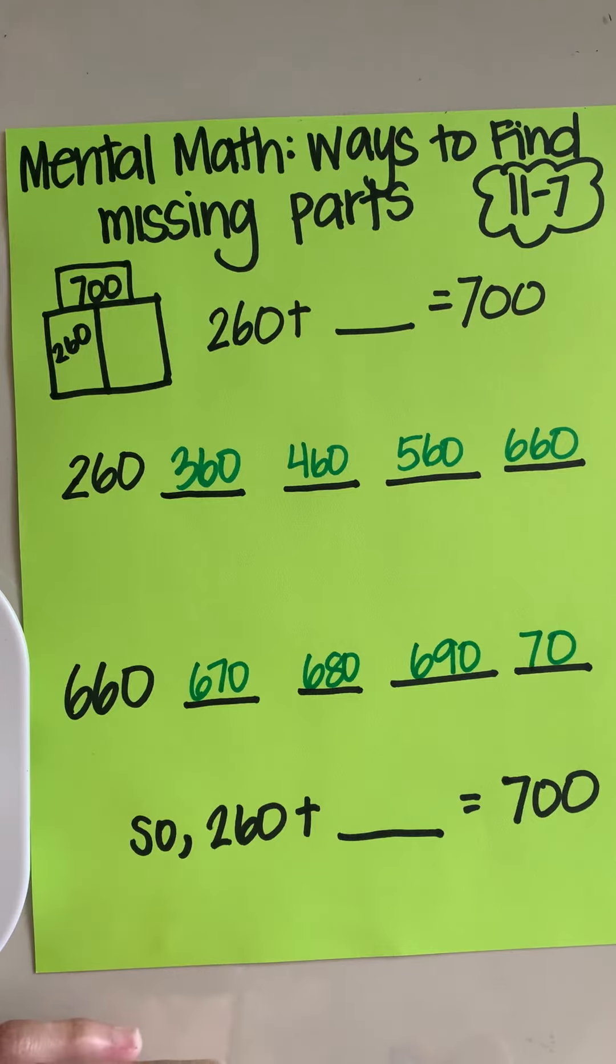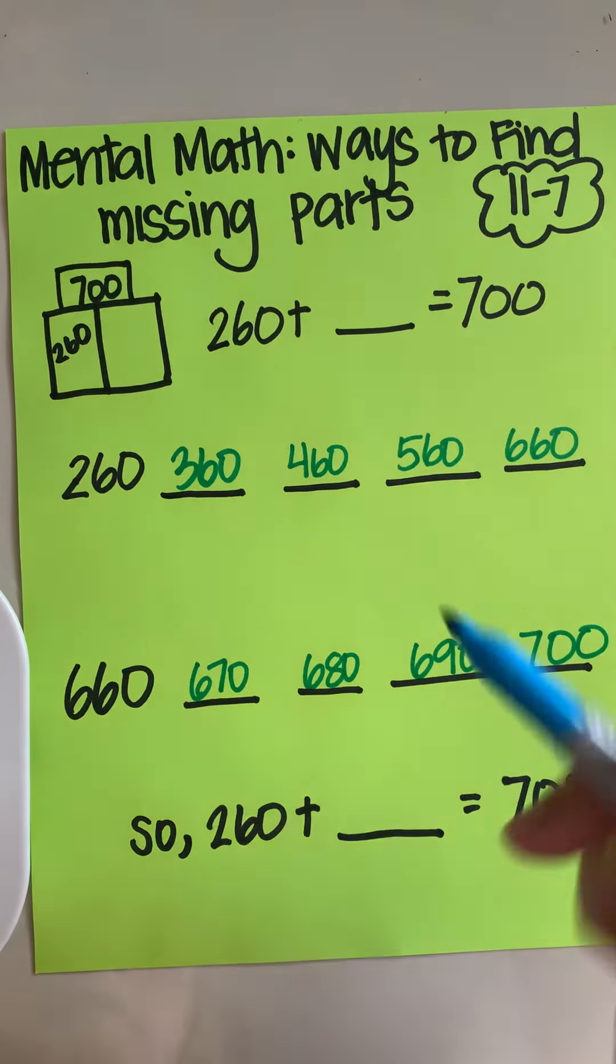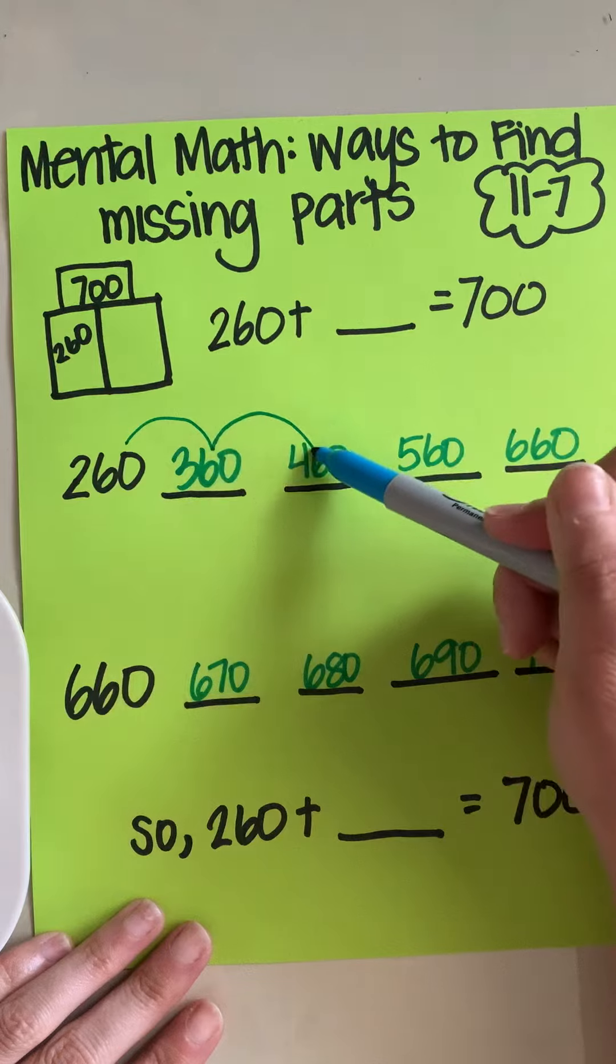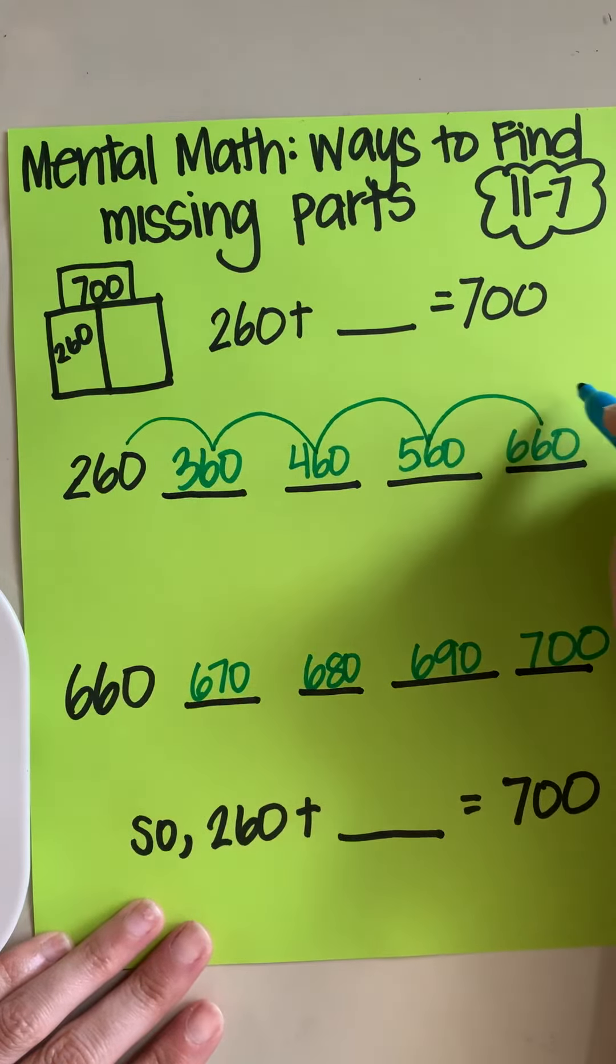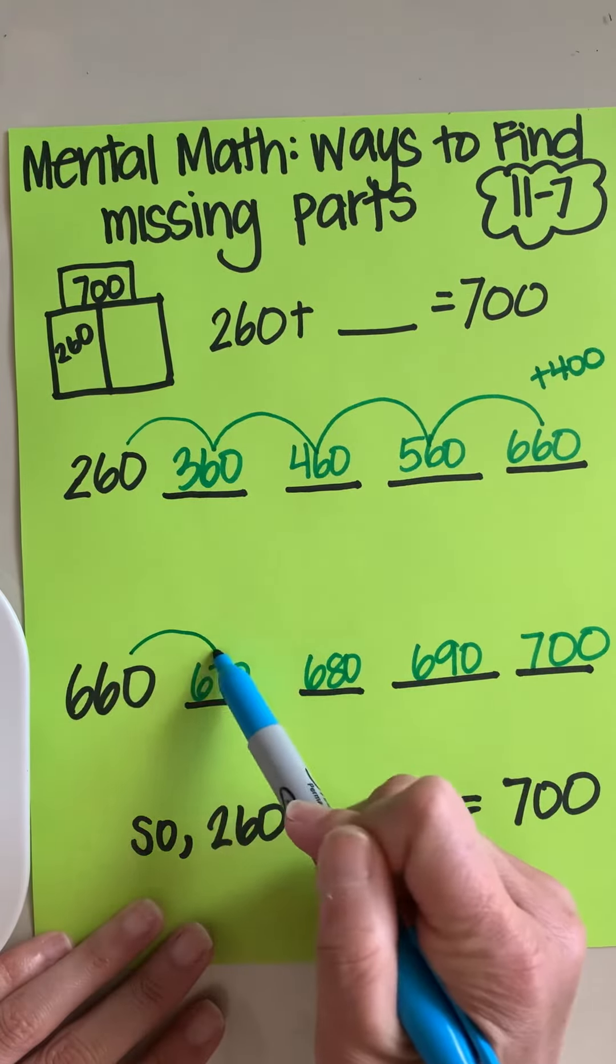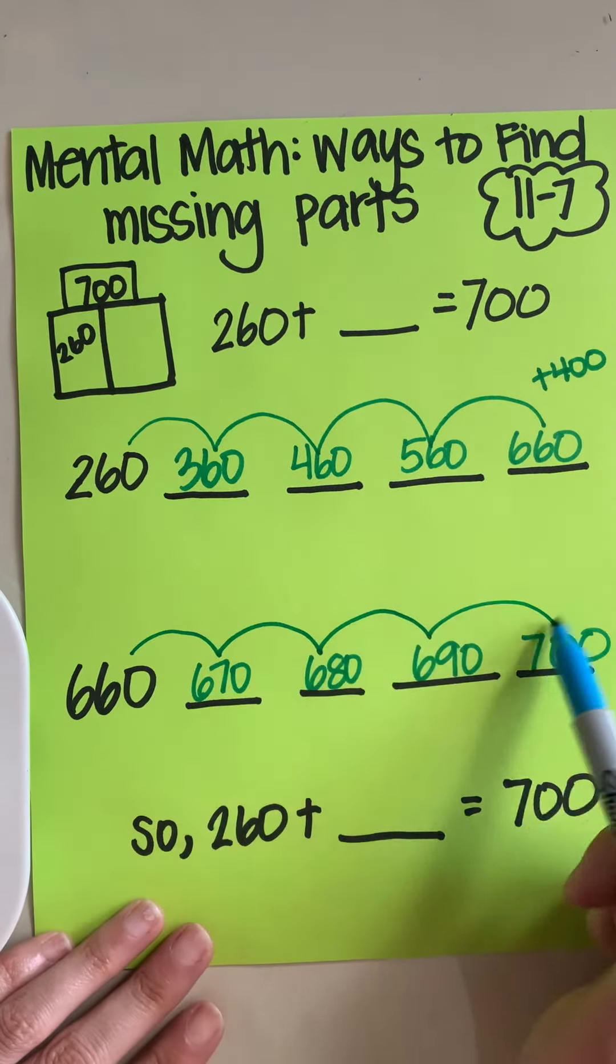Now I need to know how many jumps I took. That's great that I got to 700, but I need to make sure that the amount of jumps that I took were correct. Okay, so I have 100, 200, 300, 400. So I made a jump of 400 up here and then I counted by 10. So I went 10, 20, 30, 40.